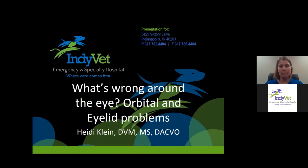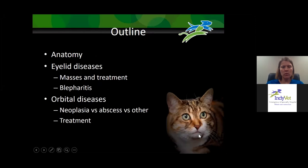Tonight I'm going to be talking about some eye problems that can be not with the eye itself, but with the area around the eye, like the orbit or the eyelid. It's a big topic so I'm not going to cover every single eyelid problem — things like entropion I've covered in other lectures — but tonight we're going to be focusing more on eyelid diseases and orbital problems.